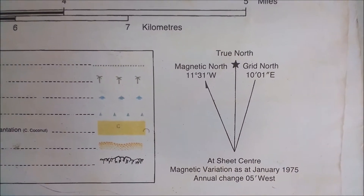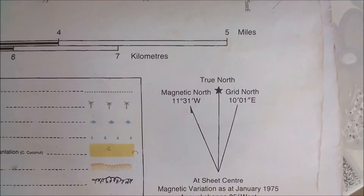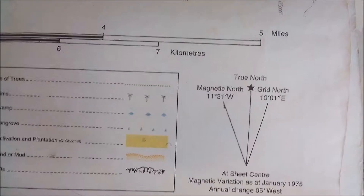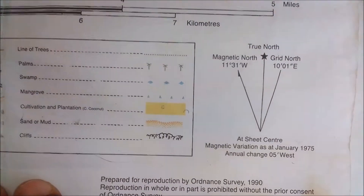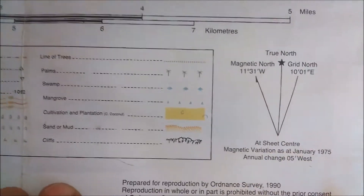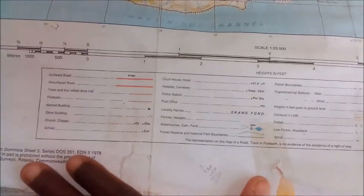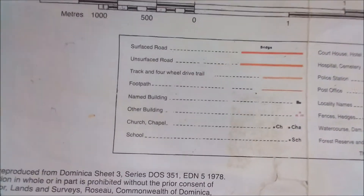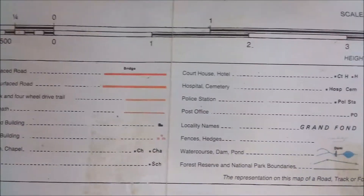In addition to the border, the title, and the scale, every map must have a north symbol. There are three different types of north: magnetic north, true north, and grid north. The north symbol is normally located beside the key or near the title, depending on the type of map.